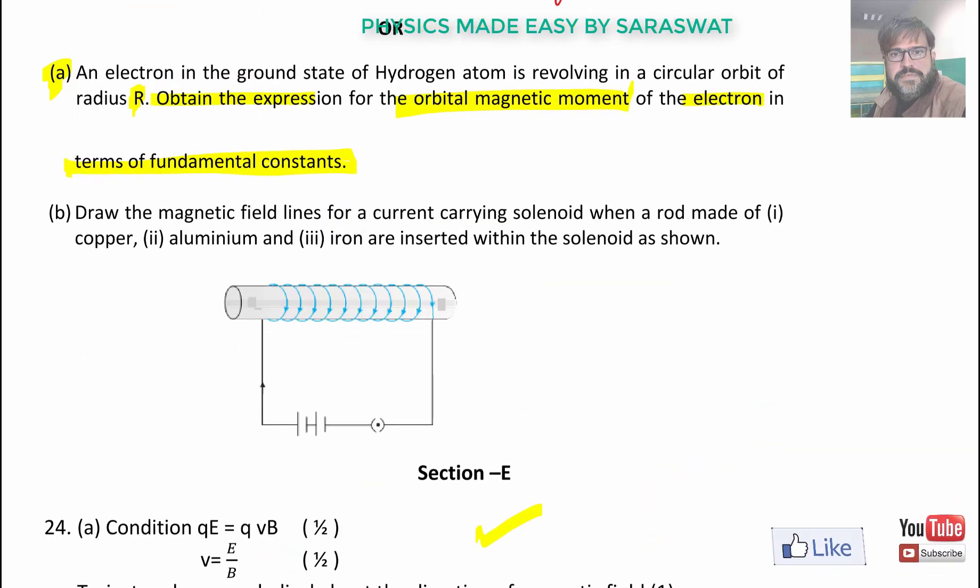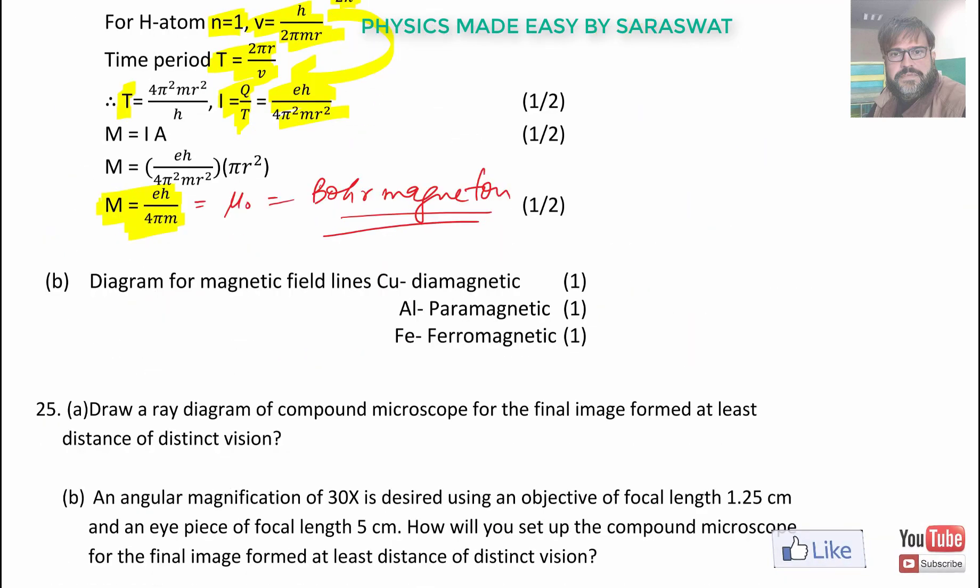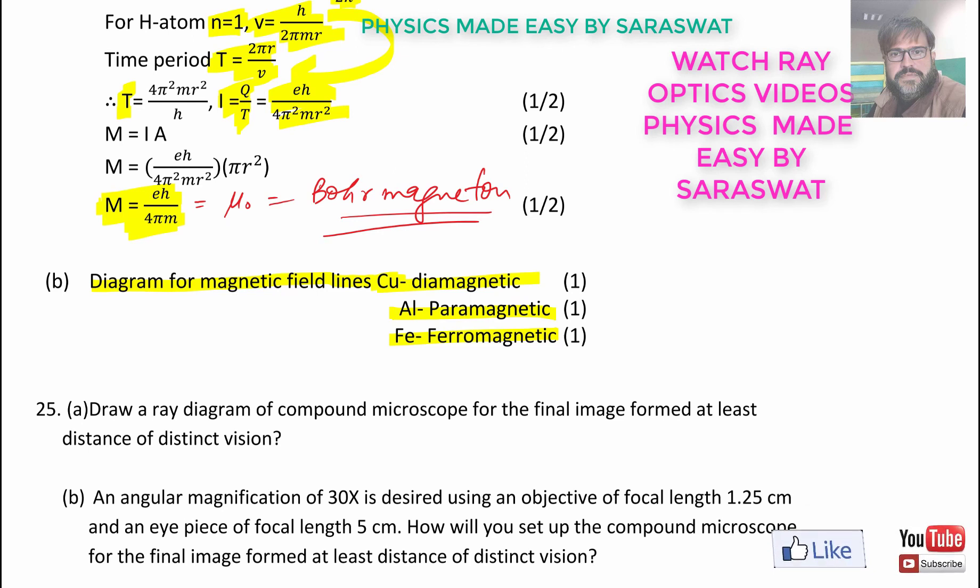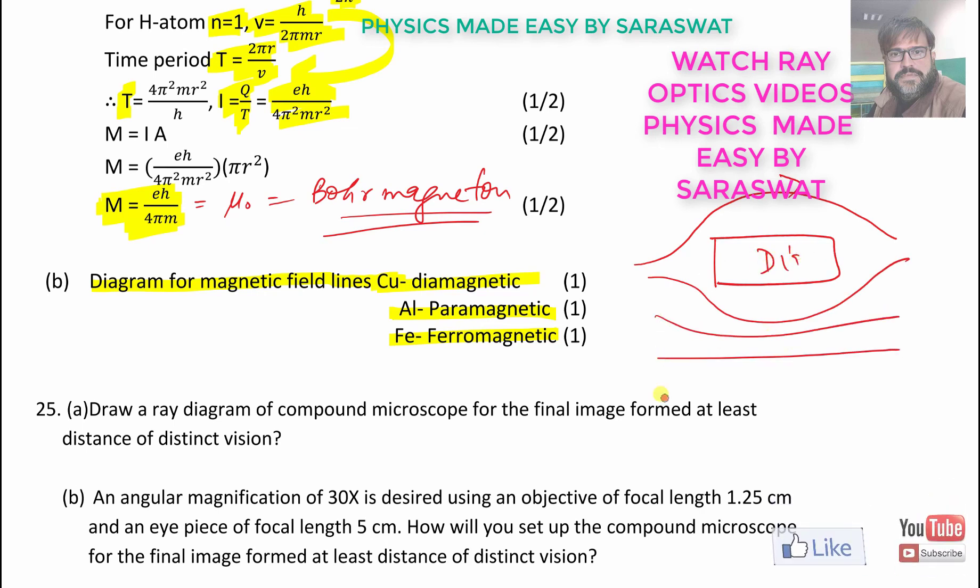Draw the magnetic field lines for a current carrying solenoid when a rod made of copper, aluminium, iron are inserted within the solenoid as shown. The answer is diagram for magnetic field lines. Copper is diamagnetic, aluminum paramagnetic, iron is ferromagnetic. In diamagnetic we will be drawing lines like this, paramagnetic like this and ferromagnetic all the lines will be passing through.